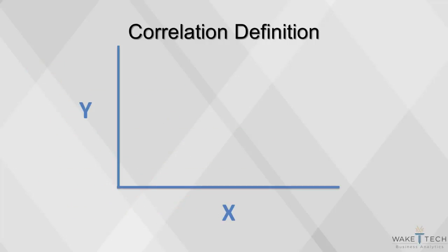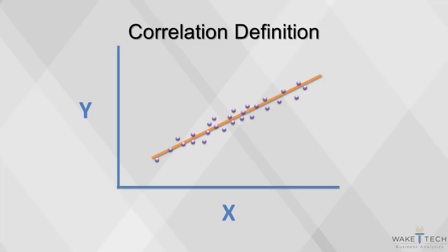Correlation is one of the most common and useful statistics. It's a measure of association — a single number that describes the degree of relationship between two variables. We can examine correlations between two variables heuristically by looking at a scatter chart. In this chart, our observations are very tightly centered around the line. In this case, we would say that the relationship between x and y is more correlated. We call this a strong correlation.